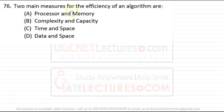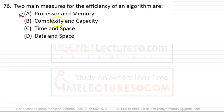Question 76: two main measures for the efficiency of an algorithm are time complexity and space complexity. Processor and memory are hardware components, not algorithmic efficiency measures. We compare algorithms using time complexity and space complexity. So answer is C: time and space.